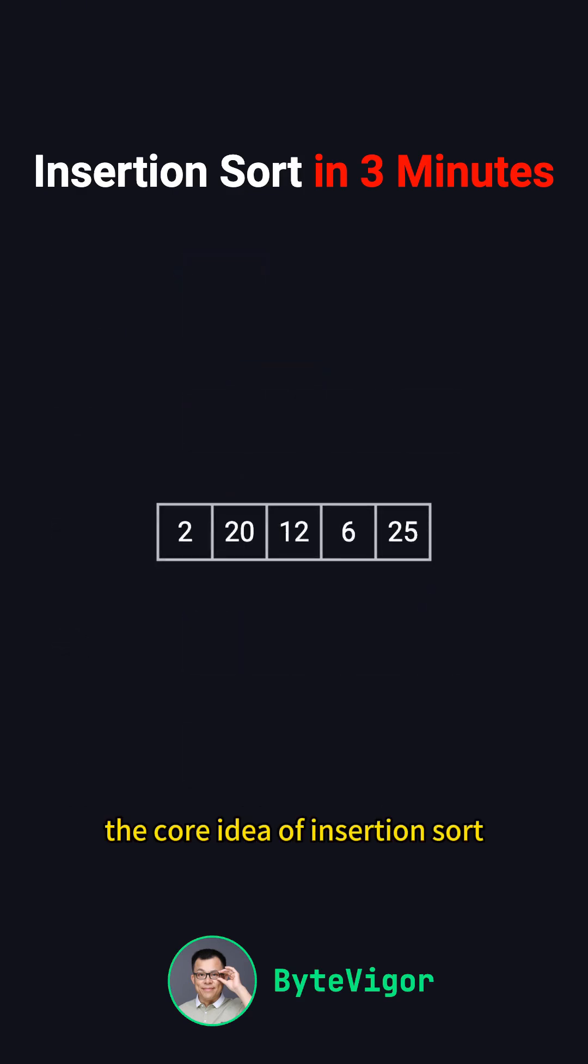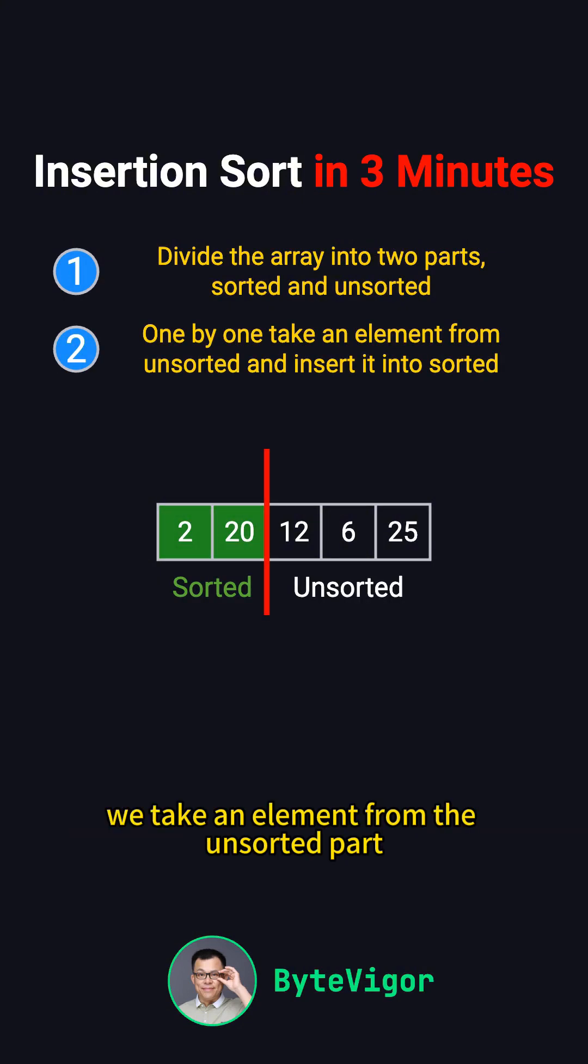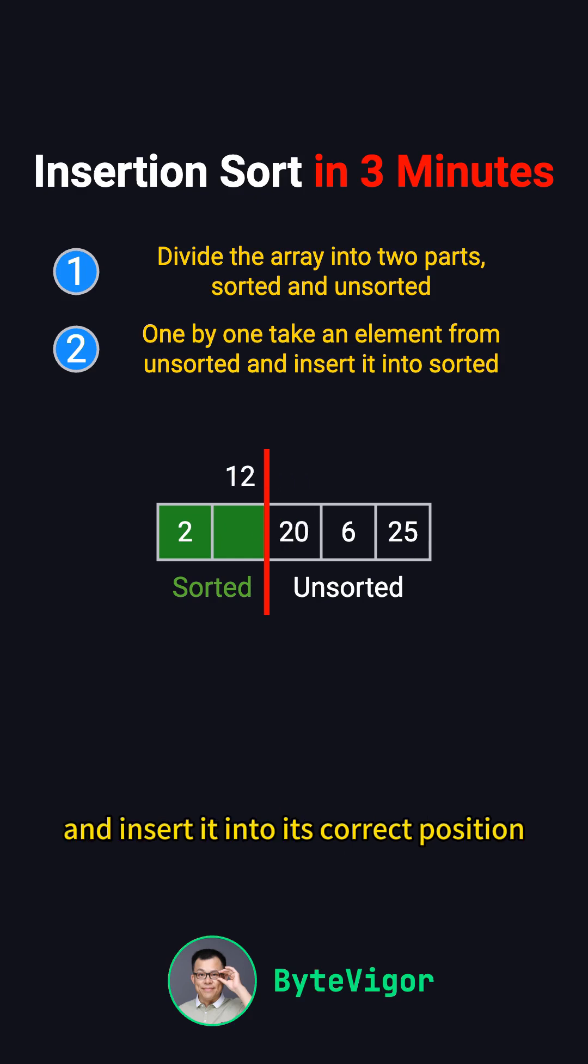The core idea of Insertion Sort is to divide the array into two parts, a sorted part and an unsorted part. Then, one by one, we take an element from the unsorted part and insert it into its correct position in the sorted part.